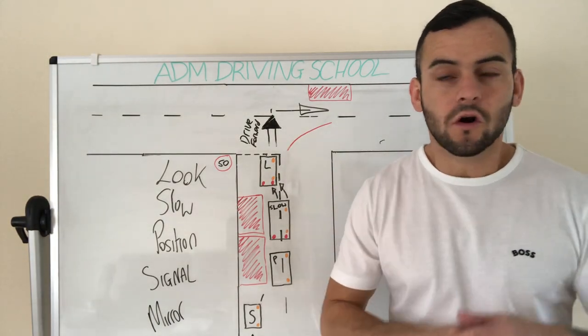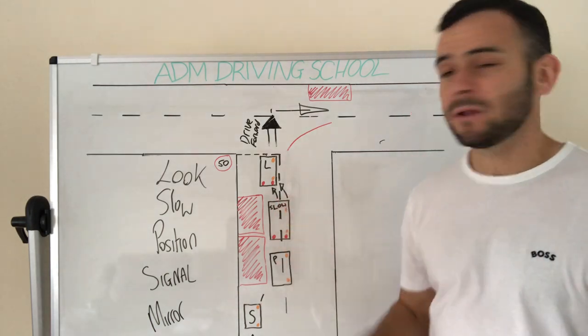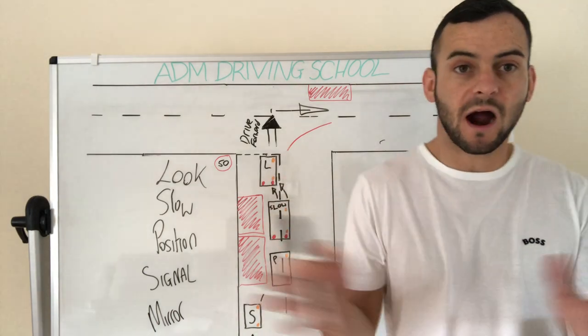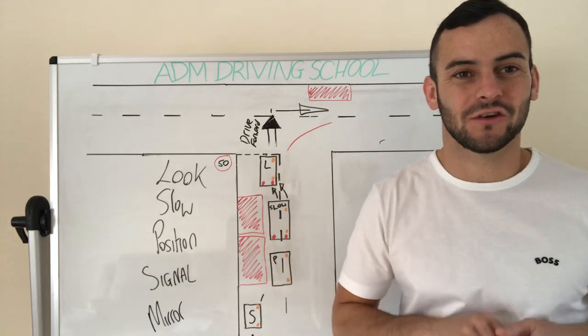So that's it, that's turning right from a T-junction. It's handy enough this one, people do tend to find it easy. But just very important, making sure we always steer from our side of the road. That's turning right from a T-junction.